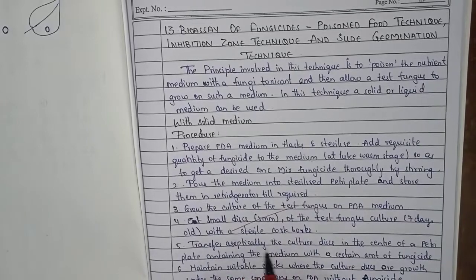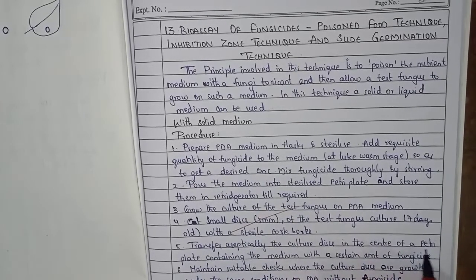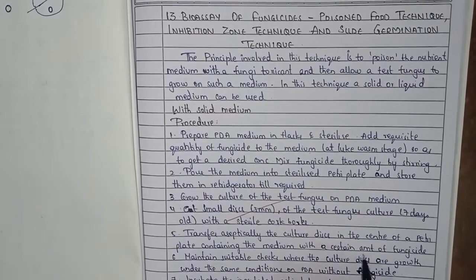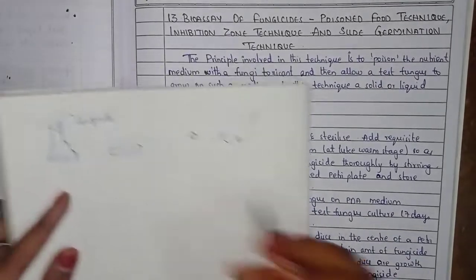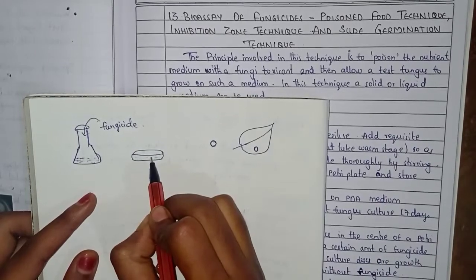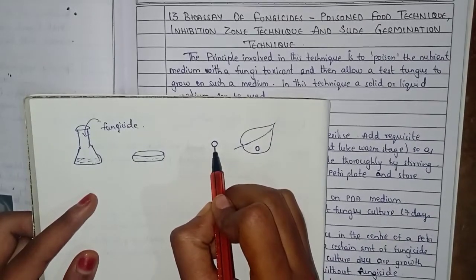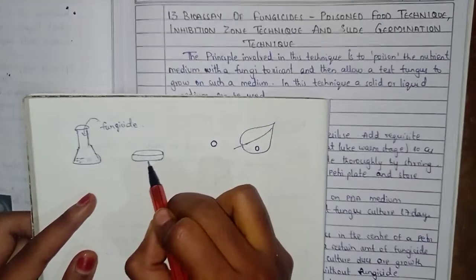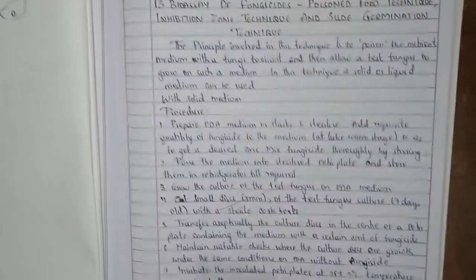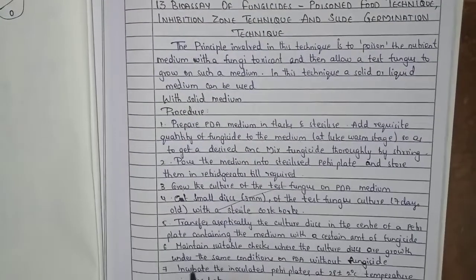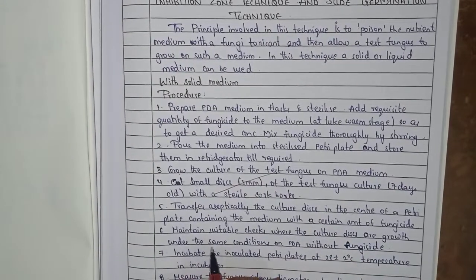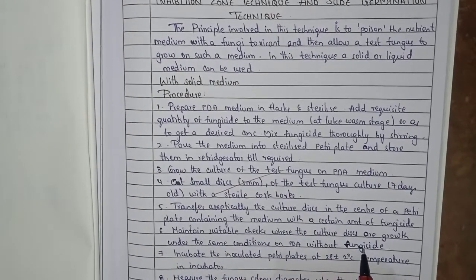Place the culture disc in the center of a petri plate containing the medium with a certain amount of fungicide. Then maintain suitable checks where the culture discs are grown under the same conditions on PDA without fungicide.